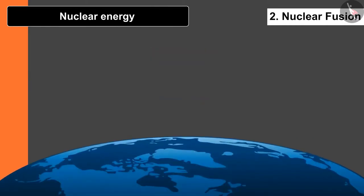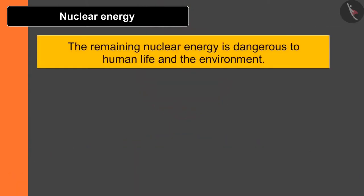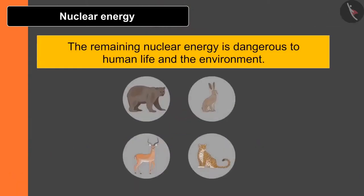This kind of temperature can't be possible on earth, but if we see the sun this kind of temperature is possible. Fusion takes place on the sun commonly. The remaining nuclear energy is dangerous to human life and the environment.